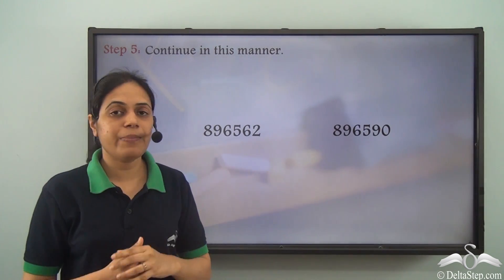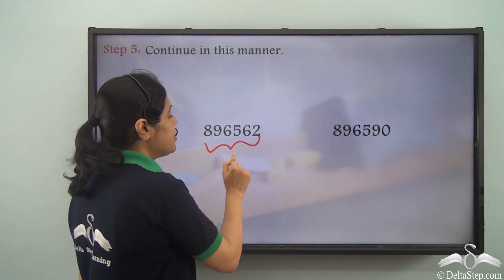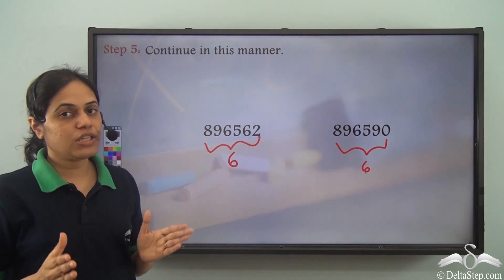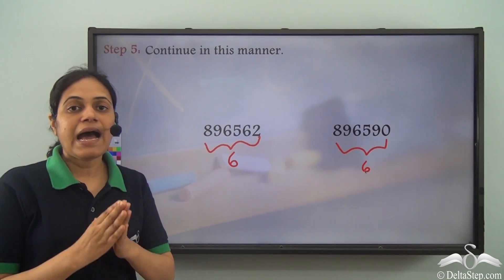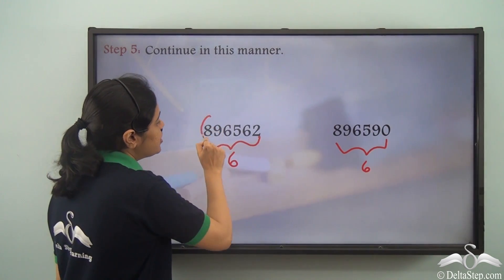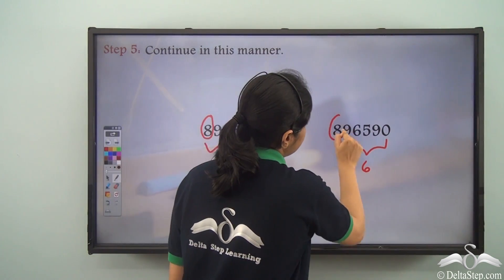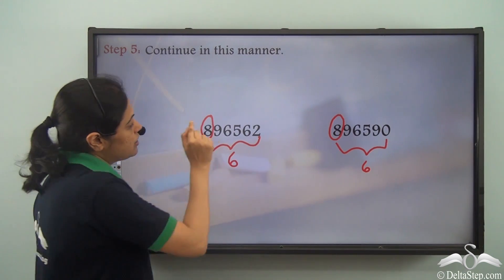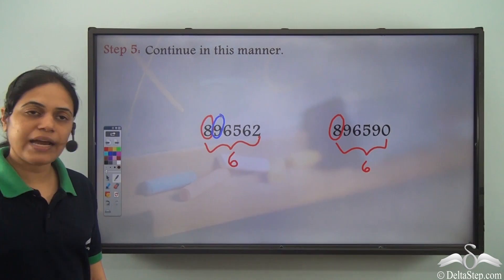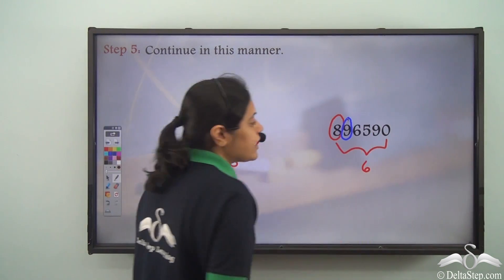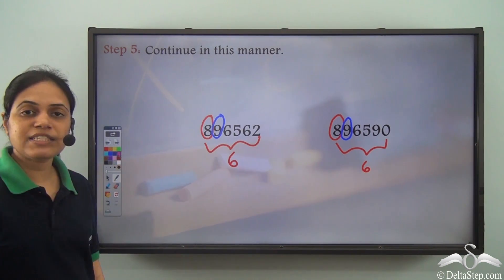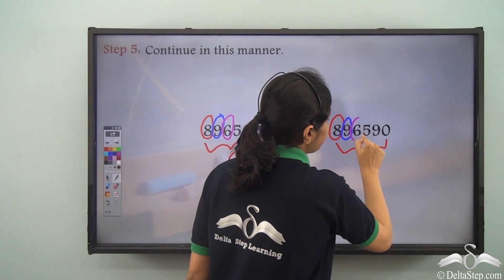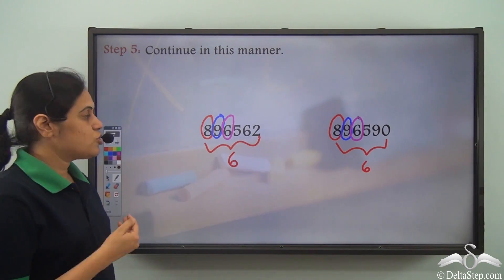Let us see how we can compare these two numbers. Both have six digits, so the number of digits are equal. I compare the first digits — both are eight, so they are equal. I move to the next digit: the second place is nine in both numbers, so they are equal. I move to the next place: both have six here as well, so they are equal.